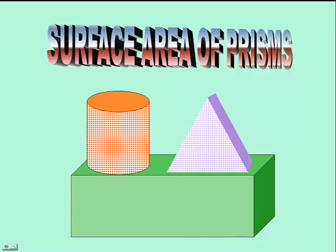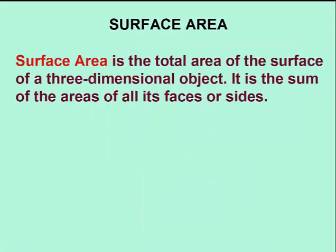In this lesson, Surface Area Prisms, we will look at three different prisms and how to calculate their surface areas. Surface area is the total area of the surface of a three-dimensional object — it is the sum of the area of all its sides.